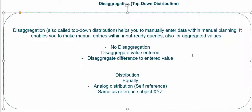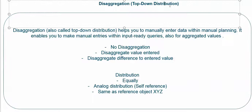I will start with the definition, then show you the options available in disaggregation, and then show you some examples to understand the concept. Disaggregation is used for top-down distribution. It helps to manually enter data within manual planning and enables you to make manual entries within input-ready queries for aggregated values. The two important things to remember: disaggregation is used for top-down distribution.